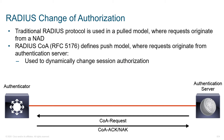Here's a pretty neat feature called RADIUS Change of Authorization. Based on what we saw in some of the previous material, when the supplicant authenticates to the authenticator, the authenticator puts them in communication with the authentication server, who can do a series of challenges. We can look at things such as what's your operating system, what's your antivirus patch level, do you have a firewall enabled, and so forth.